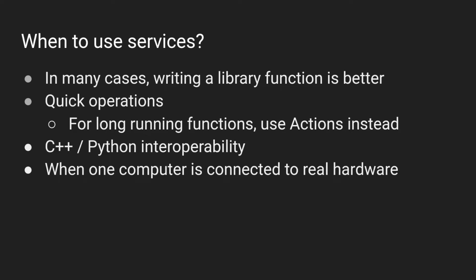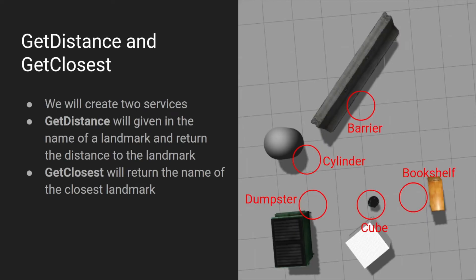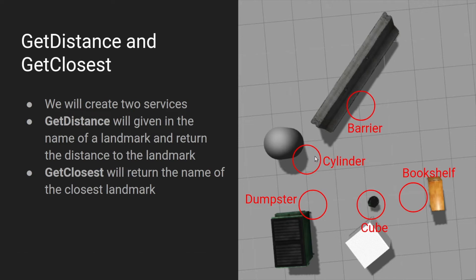To get into the specifics of writing a service, we'll jump into a project with code in both C++ and Python. We'll write two services: 'get_distance', which takes the name of a landmark and returns the distance to it from the robot, and 'get_closest', which takes no input and returns the name of the closest landmark. We're going back to the turtle bot example with the same landmarks used in previous videos.